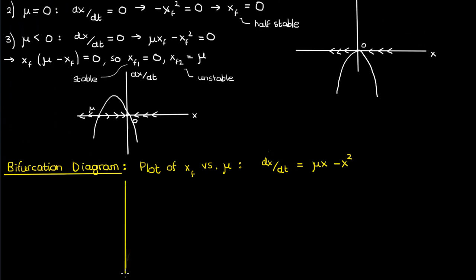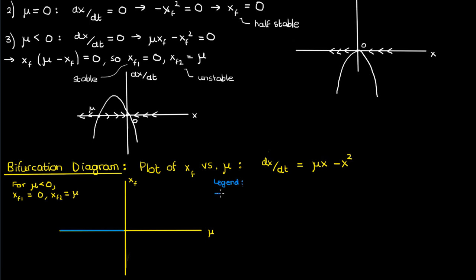We start creating our bifurcation diagram for negative μ. There are two fixed points: xf1 was always zero and independent of μ, while xf2 was equal to μ for negative μ. The fixed point at zero was stable for negative μ, so I'll draw xf equals zero on the left half of the bifurcation diagram using a solid line to denote stability. The fixed point at μ was unstable for negative μ, so I'll draw xf2 equals μ with a dashed line on the left half.